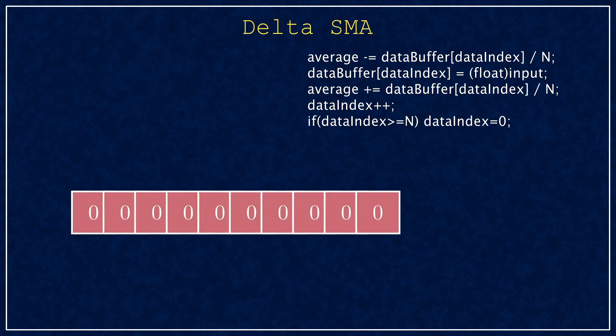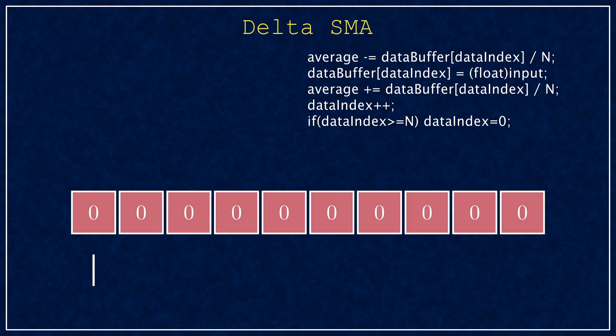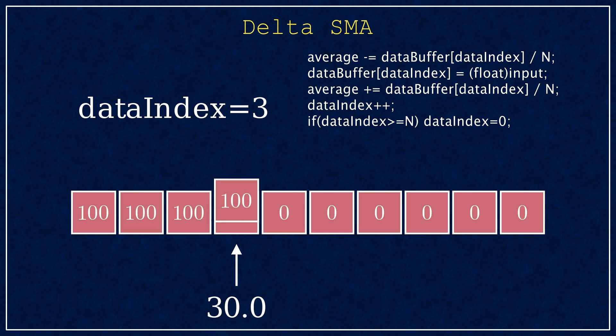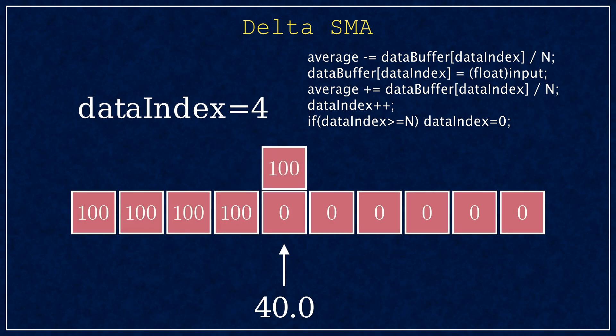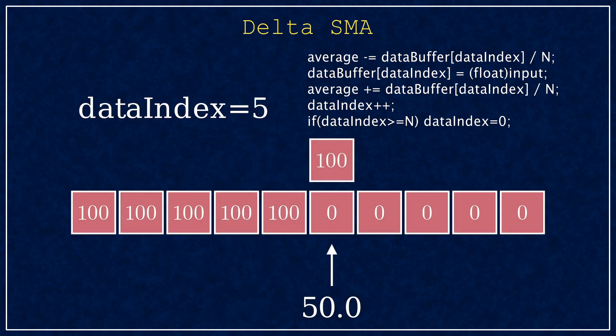I haven't found a name for this type of implementation, so I decided to call it Delta SMA. So how does this work? You keep going around the circular buffer, subtract the old value, update the measurement and add the new value. Don't forget to divide by 10 in there somewhere and that's it.